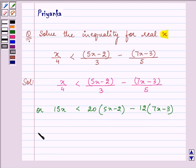Now on removing the brackets we have 15x is less than 100x minus 40 minus 84x plus 36.